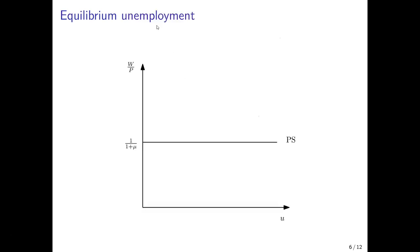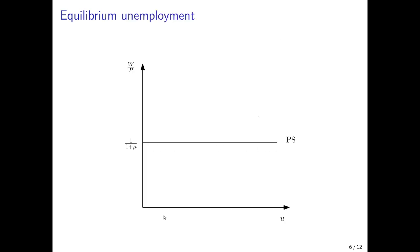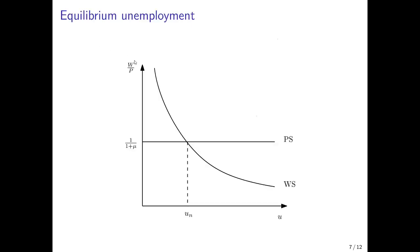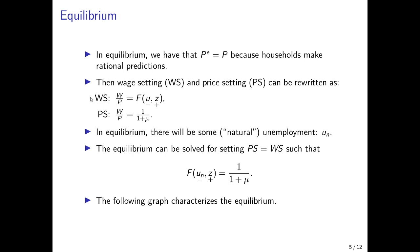Now I describe the equilibrium using graphs, where we plot the real wage on the vertical axis and the unemployment rate on the horizontal axis. The price-setting equation is simply a horizontal line determined by the market power of firms: 1 divided by 1 plus mu. The wage-setting equation is a downward-sloping curve, because the real wage depends negatively on unemployment — if unemployment is higher, people bargain less for nominal wage increases, which also decreases the real wage. The function F here is nonlinear.